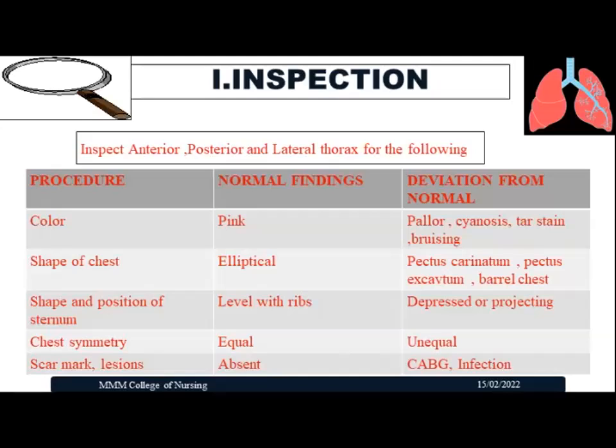During inspection, first assess the color of the chest skin — posterior, lateral, and anterior. The normal finding is pink coloration. Abnormal findings associated with decreased oxygenation to the tissues include pallor, cyanosis, tar staining, or bruising.